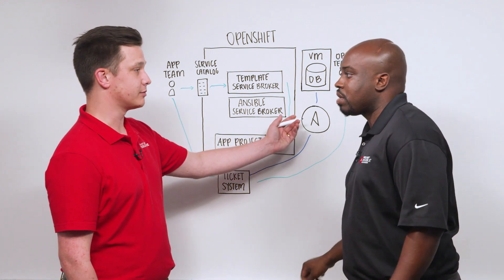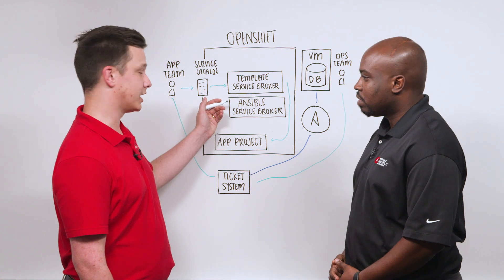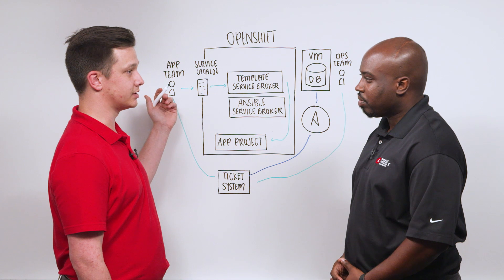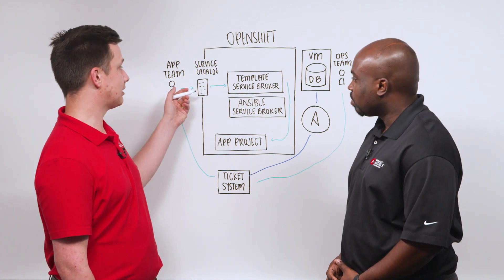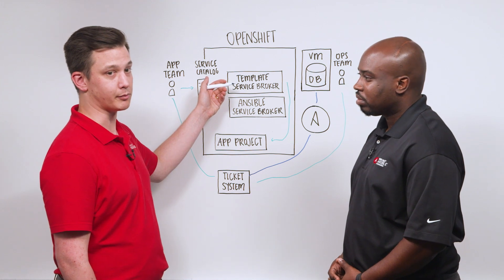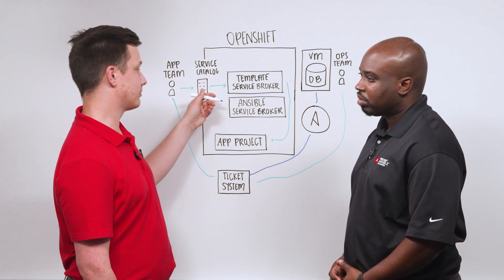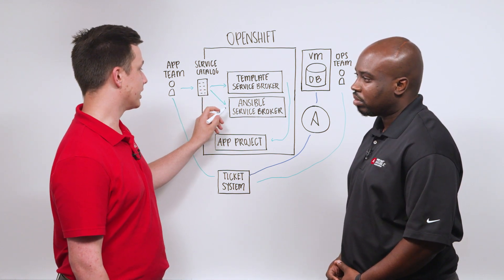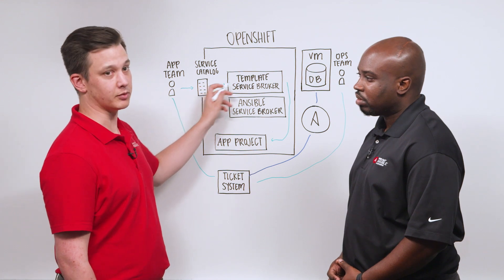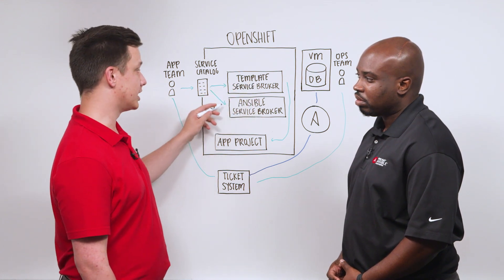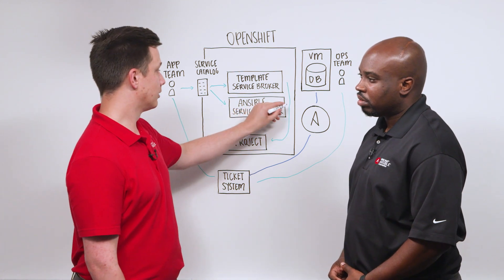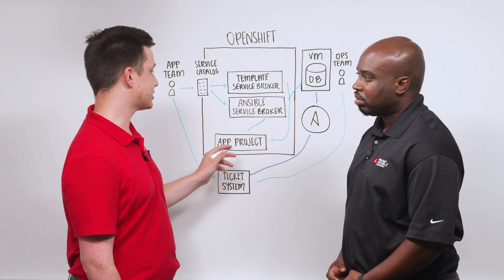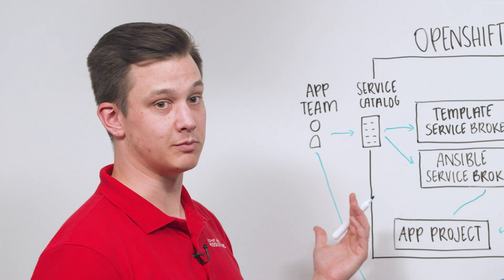We can actually take these same playbooks that your team is already maintaining and put them into the Ansible Service Broker and connect that to the service catalog. This allows app teams to go into the same service catalog they are already using for application templates, and select off-cluster resources provided by the service broker. They would select their Node.js app and their database — the Node.js app would be provisioned by the template service broker, but the database would be provisioned by the Ansible Service Broker, which would run the same playbook and then bind the credentials and connection information back to your project so your application can connect almost immediately.